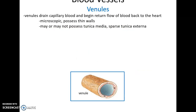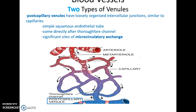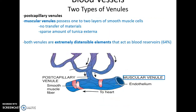Venules are the smallest vessels carrying blood back to the heart. They have very thin walls with minimal tunica interna and externa, and may or may not have a tunica media. Post-capillary venules come directly after the capillary junction — they are basically simple squamous endothelial tubes and also allow for microcirculatory exchange, letting fluids exchange between the tissues and the venule.